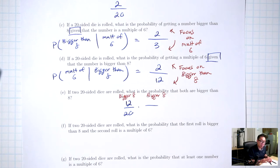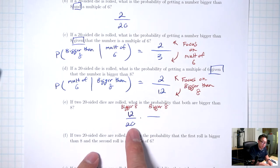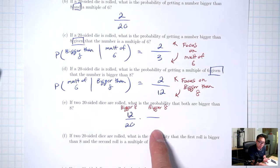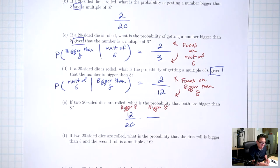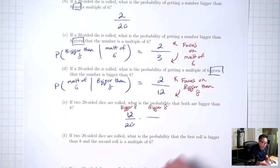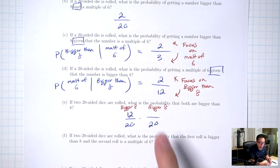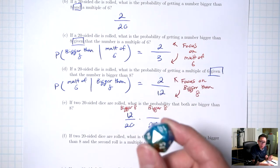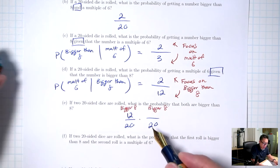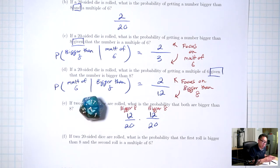For the second fraction, this is where dice differ from the people-and-table example. When picking people, I don't pick the same person again, so we reduce by 1. For dice though, when I roll a second time, I can still get all 20 numbers again. So for dice rolled multiple times, you don't reduce. The second fraction bottom is the full 20, and bigger than 8 still gives the full 12.